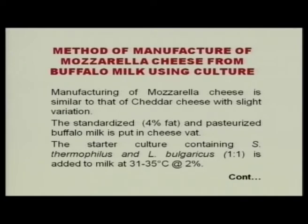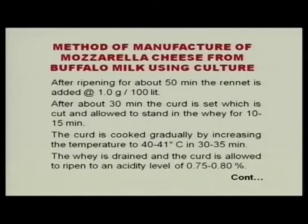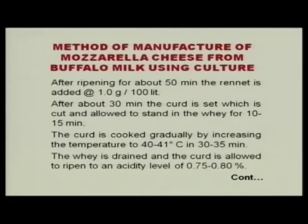The starter culture used is Streptococcus thermophilus and Lactobacillus bulgaricus in a 1:1 ratio, added at 31 to 35 degrees centigrade, normally at 2%. Since we go for higher temperatures in this process, thermophilic cultures are appropriate. After ripening for about 15 minutes, rennet is added at the rate of 1 gram per 100 liters. Like in cheddar cheese, after about 30 minutes the curd is set and allowed to stand for 10 to 15 minutes as a resting period.